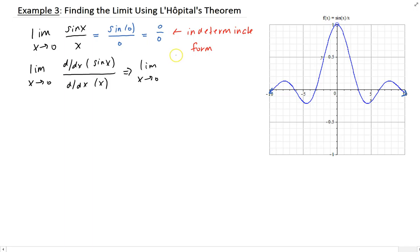So that's going to have the derivative of sine is just cosine x divided by the derivative of x is 1.